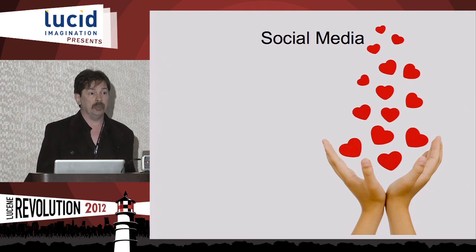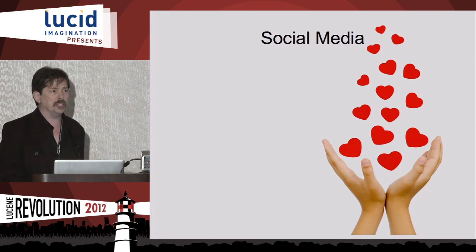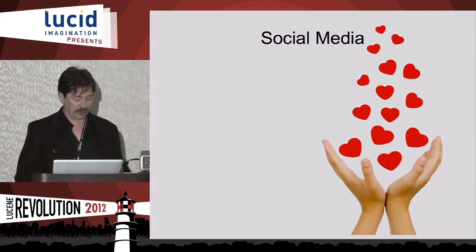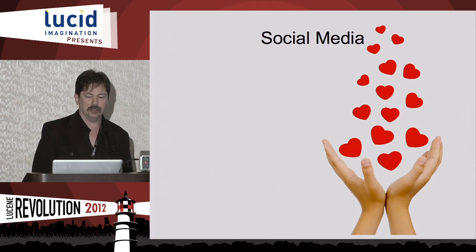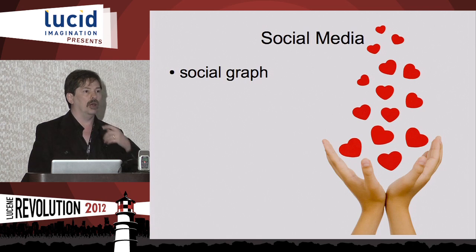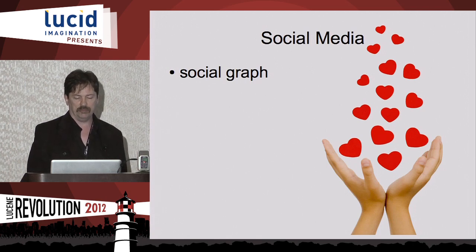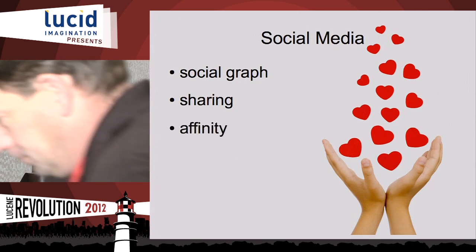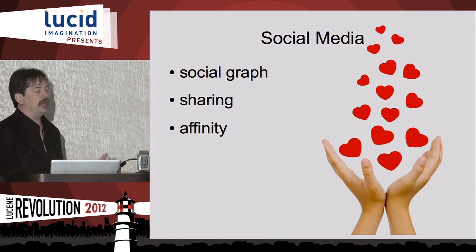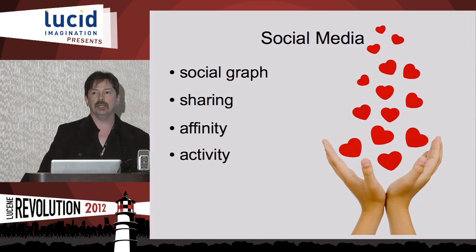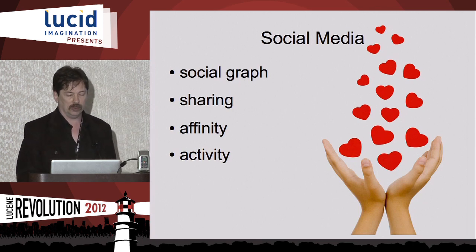So what's social media? In a social media application, you have a social graph where users are connected to each other, usually as friends. There's sharing, where you upload content and expect your friends to see it. There's a notion of affinity, where users are encouraged to like content and that's broadcasted to your social graph. And what users do may become content in itself, such as friending somebody.